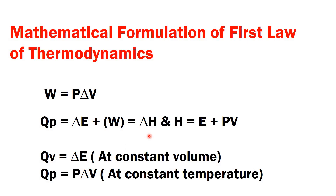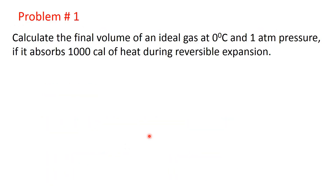Now let's start the problems. Problem number one: Calculate the final volume of an ideal gas at zero degrees centigrade and one atmosphere pressure if it absorbs 1000 calories of heat during reversible expansion. Here, temperature is constant — that is zero degrees centigrade — meaning it is an isothermal process. Constant pressure is one atmosphere, and at this condition, 1000 calories of heat is absorbed.